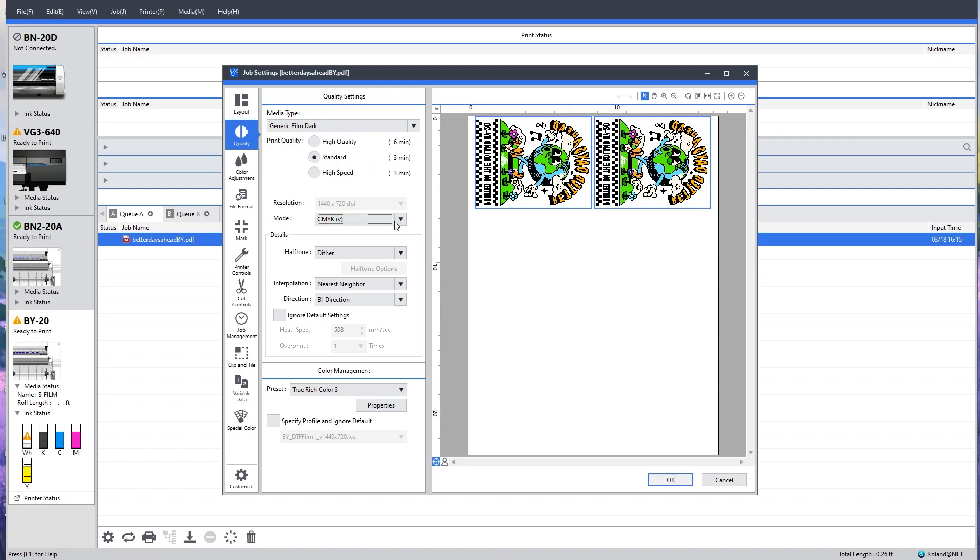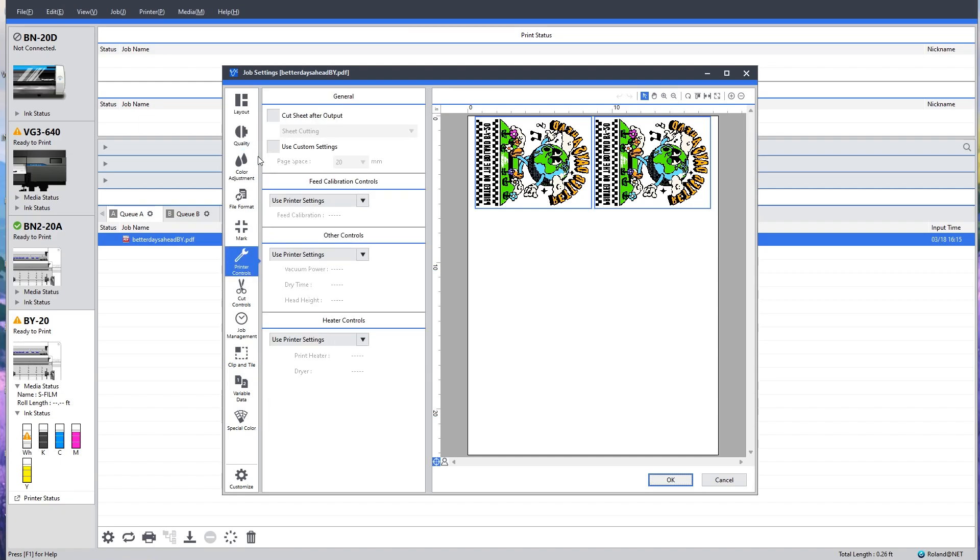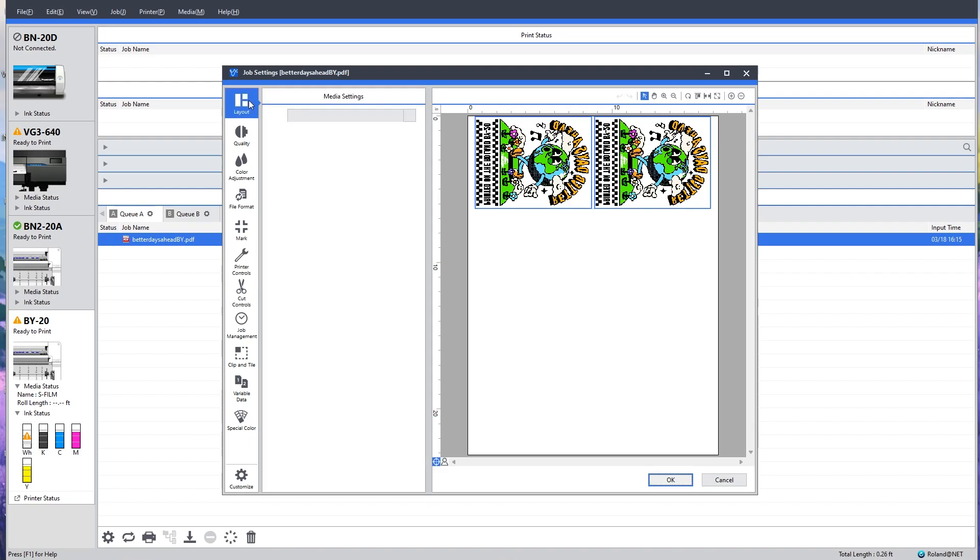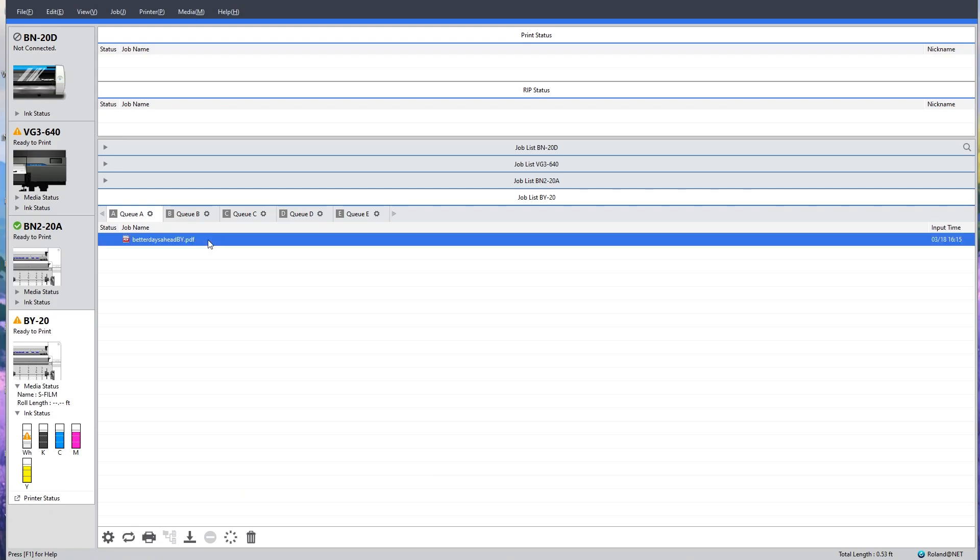With the BY they added the option where you now can print CMYK and white at the same exact time. The last thing I want to check is my printer controls because I might want to cut the sheet after output. Once my file is all complete and ready to print, I can click OK and then I can hit print.